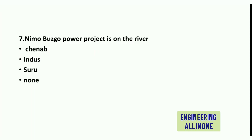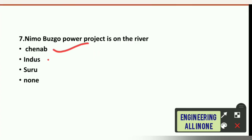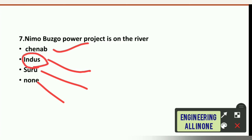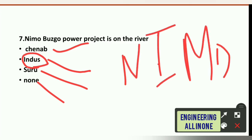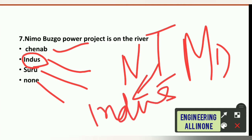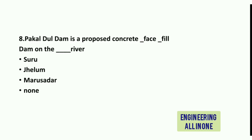Question 7: Nemo Busgo power project is on which river? Options are: Chinab, Indus, Suru River, or none. The right option is option B: Indus River. To remember this, the 'I' in 'Nemo' can help us associate it with Indus river.